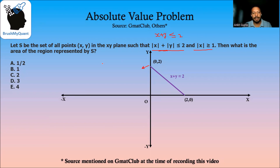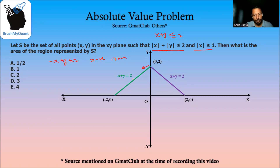Similarly, in the second quadrant where x is negative and y is positive, we can open the absolute value as -x + y ≤ 2. We draw the line -x + y = 2, and since it is less than 2, it will be in this direction.